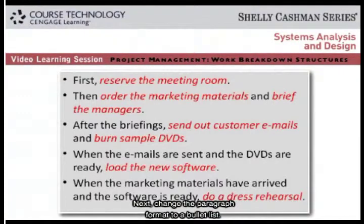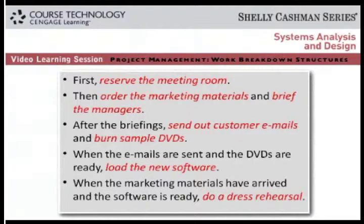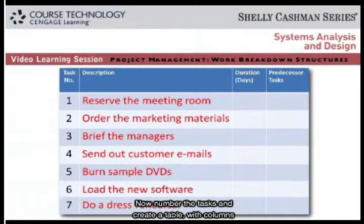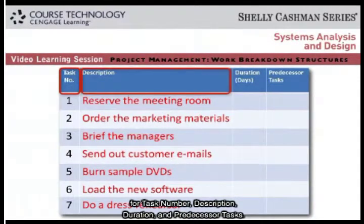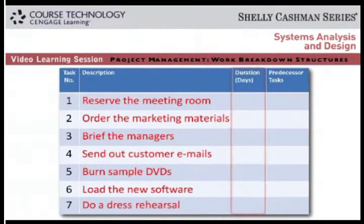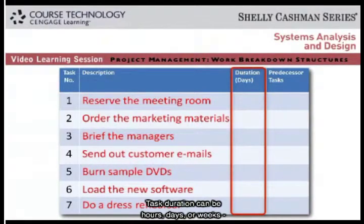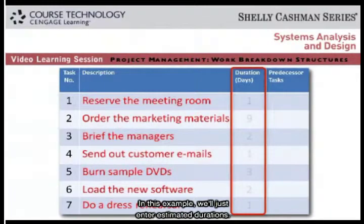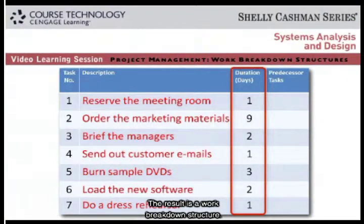Next, change the paragraph format to a bullet list. Now number the tasks and create a table with columns for task number, description, duration, and predecessor tasks. Task duration can be hours, days, or weeks, depending on the project. The textbook explains how to use a formula to make a best-case estimate for each task. In this example, we'll just enter estimated durations. The result is a work breakdown structure.